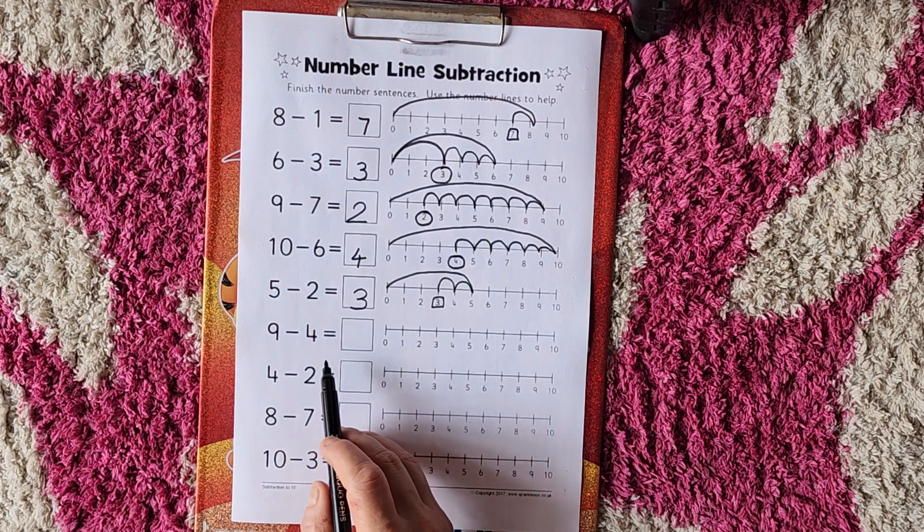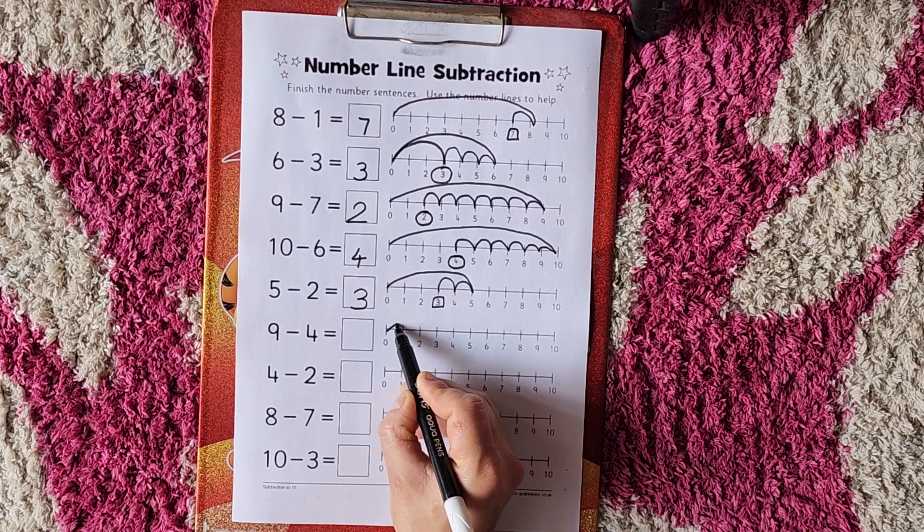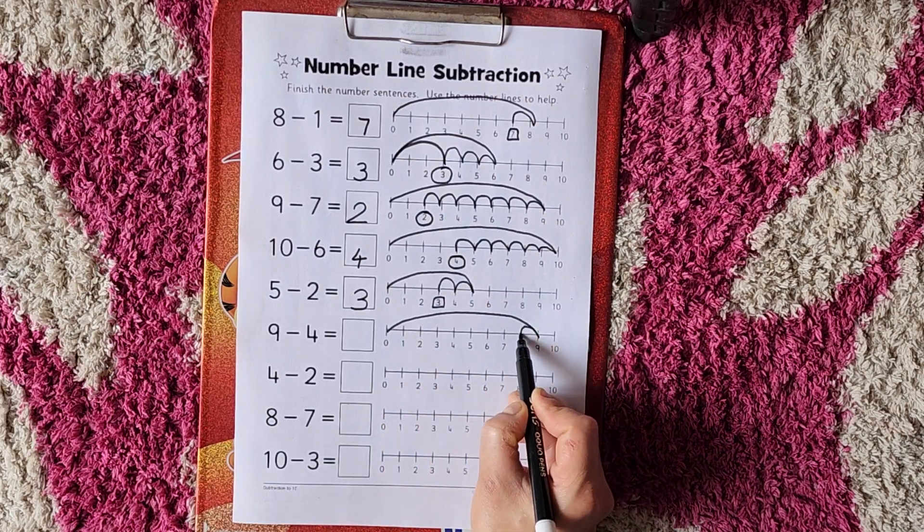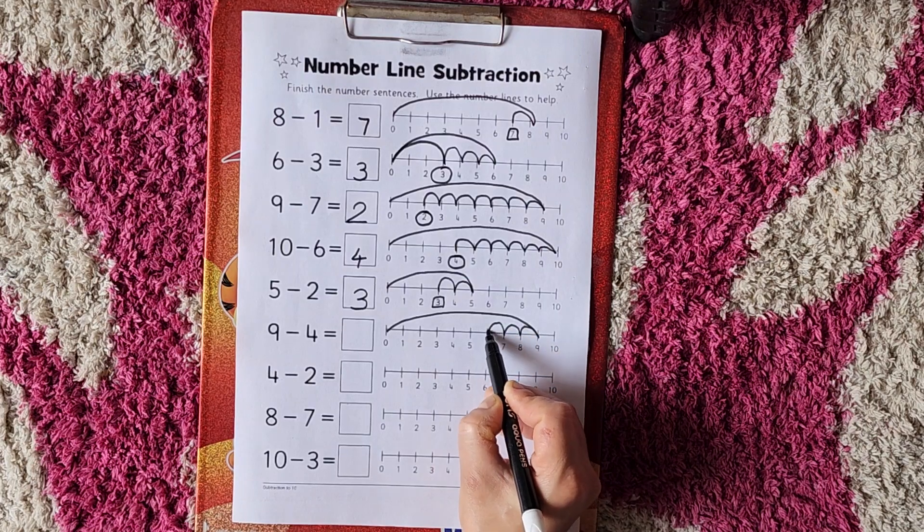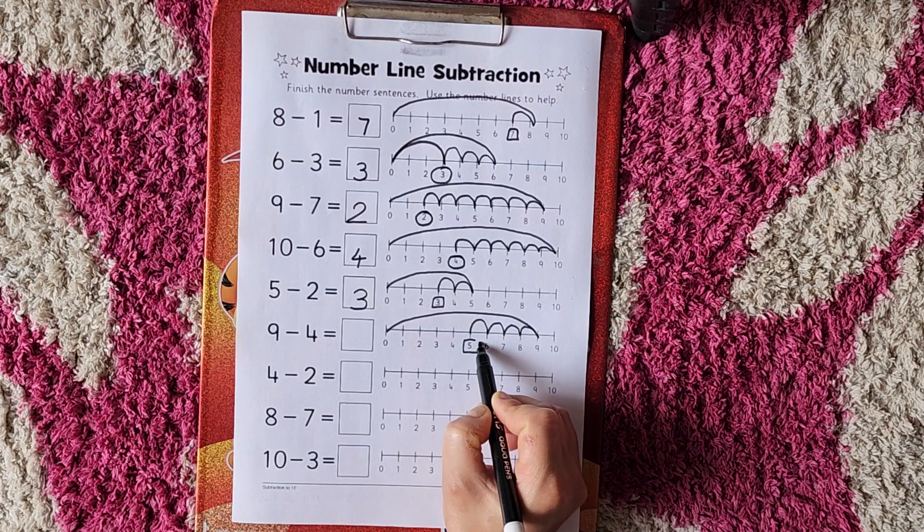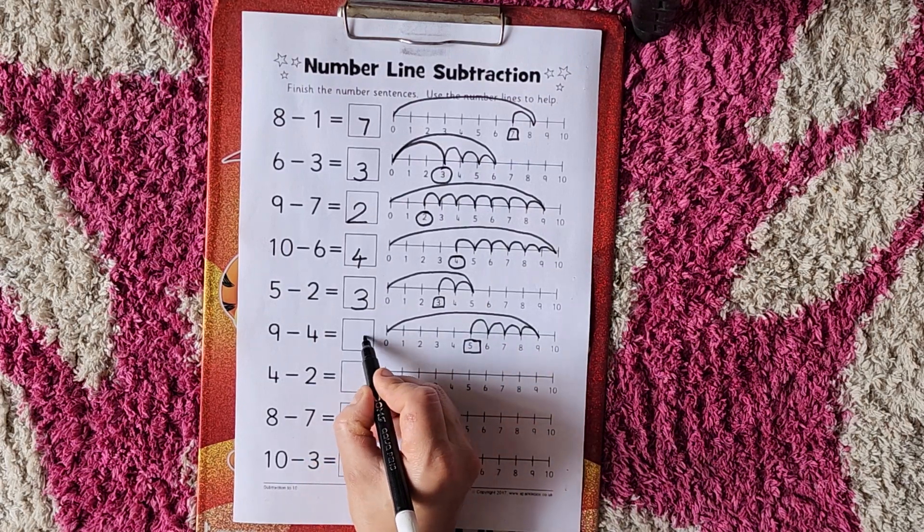Now 9 minus 4. Put the pencil on 0, straight away go to 9. And minus 4. 1, 2, 3, 4. Where did we reach? 5. So 9 minus 4 is equal to 5.